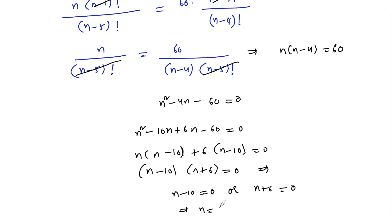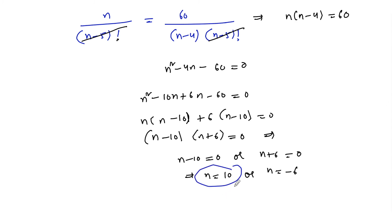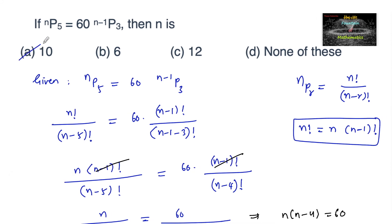So either n minus 10 equals 0 or n plus 6 equals 0, which implies n equals 10 or n equals minus 6. Since n must be a positive integer, we do not consider the negative value. Therefore n equals 10 is the valid answer, and option A is correct.